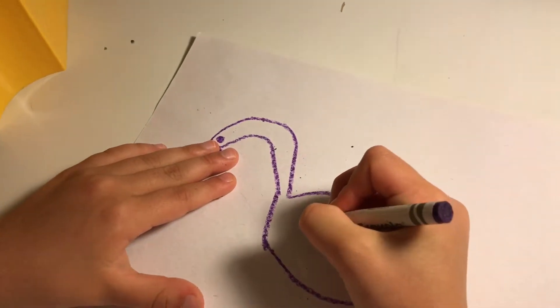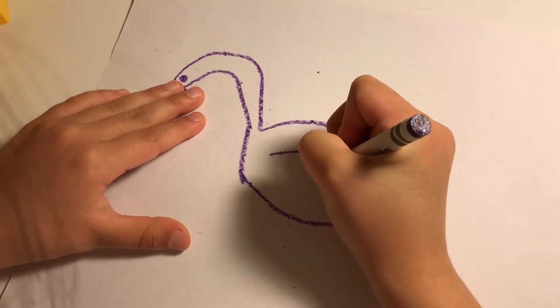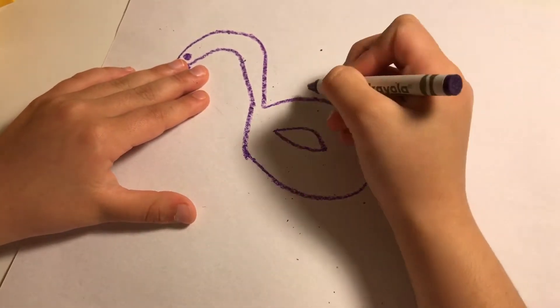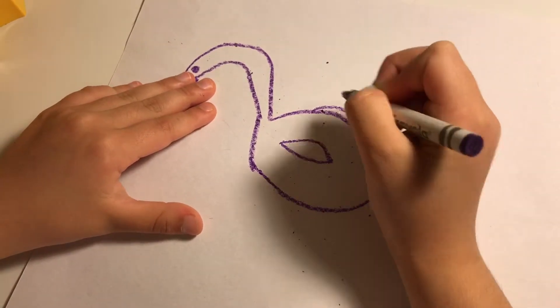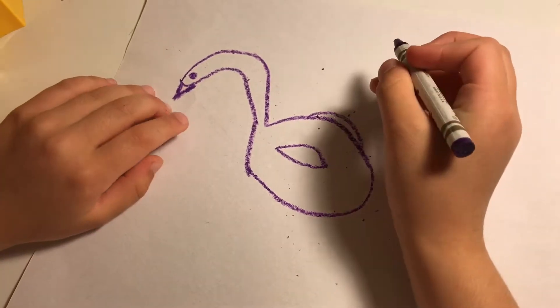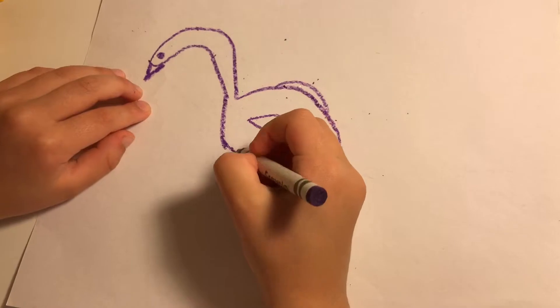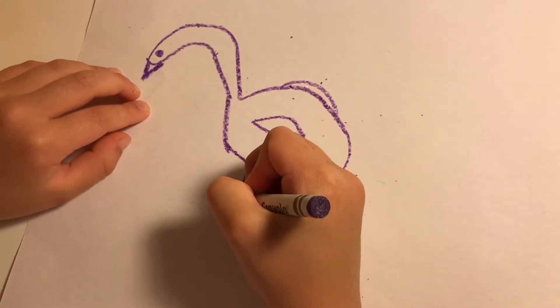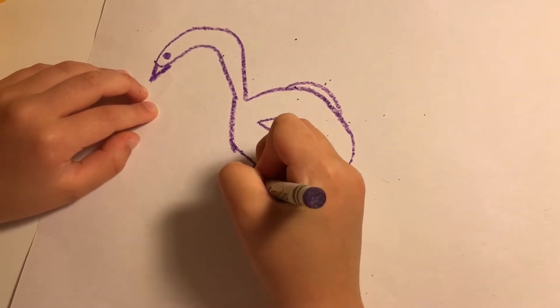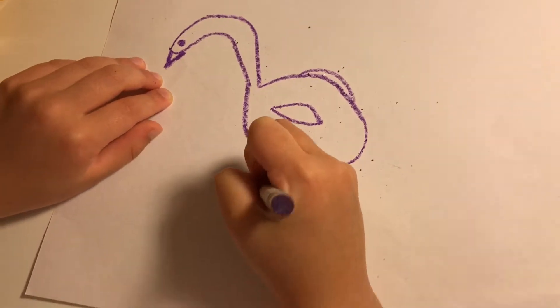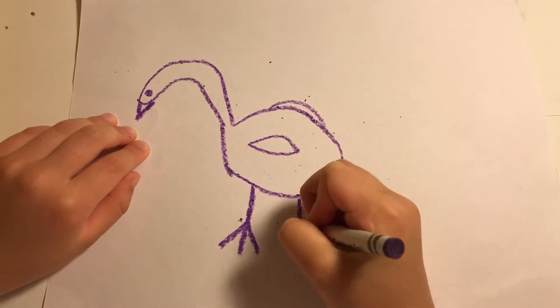Then you're going to do like one wing. It's like an oval. And then another wing, a semi circle. And then I'm going to draw some feet like it's flying, because it's not going to be in the water.